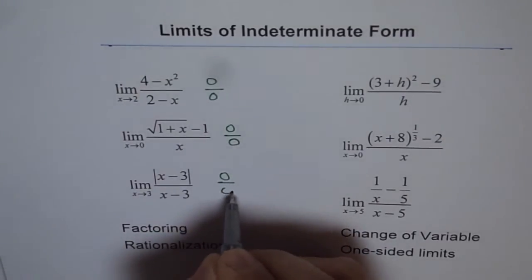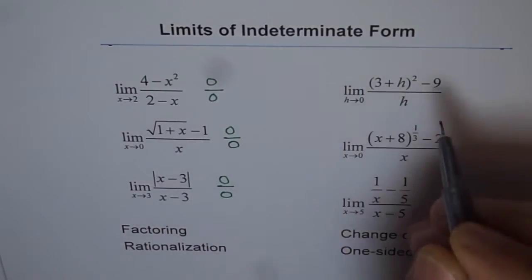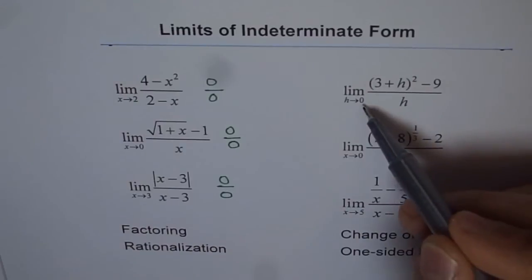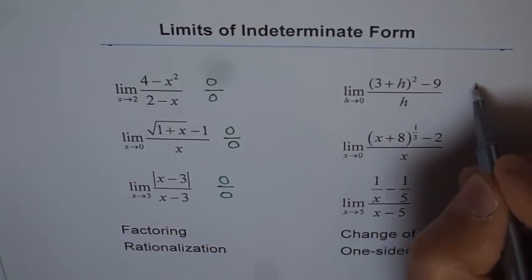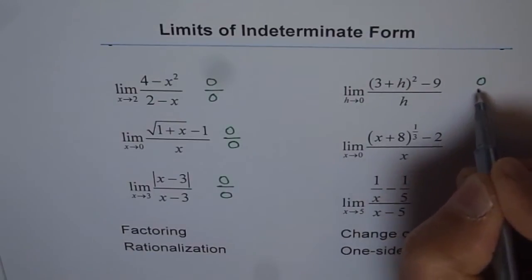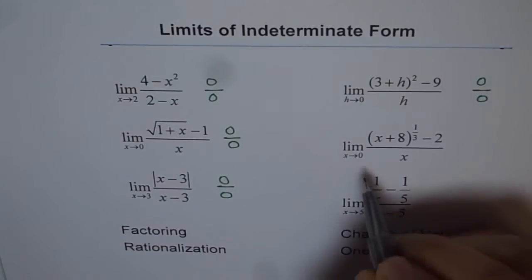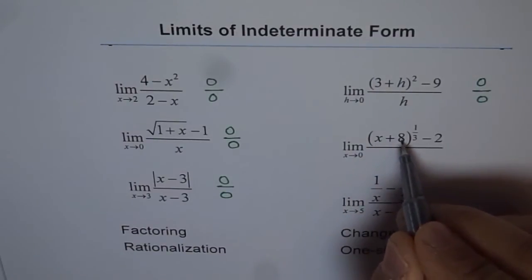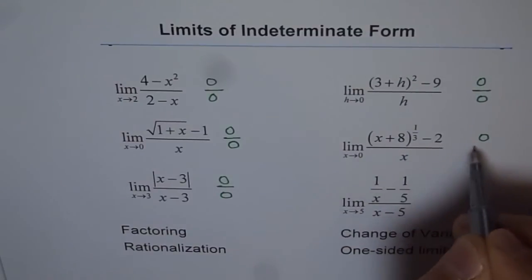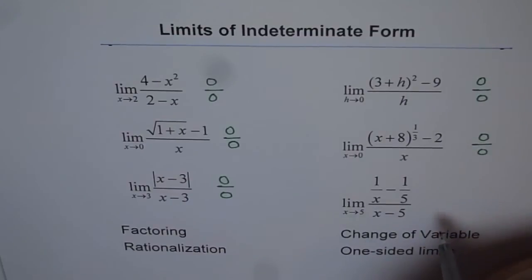Now here also if I put h as 0, I get 3 squared which is 9, and 9 minus 9 is 0, and h is also 0. Correct. In this case if I put x equal to 0, I get 0 plus 8. Cube root of 8 is 2, and 2 minus 2 is 0. x approaching 0, so we get 0 over 0.